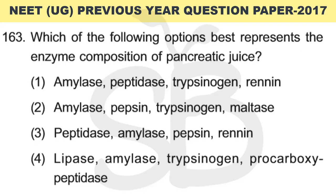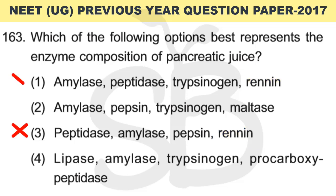Question number 163: Which of the following best represents the enzyme composition of pancreatic juice? Gastric juice contains the enzyme rennin — so options 1 and 3 containing rennin are incorrect for pancreatic juice. Maltase is an intestinal juice enzyme, eliminating options 2 and 4 that contain maltase. The correct composition of pancreatic juice is: lipase, amylase, trypsinogen, and procarboxypeptidase. The correct answer is option 4. This is from Plus 1 biology, chapter: Digestion and Absorption.